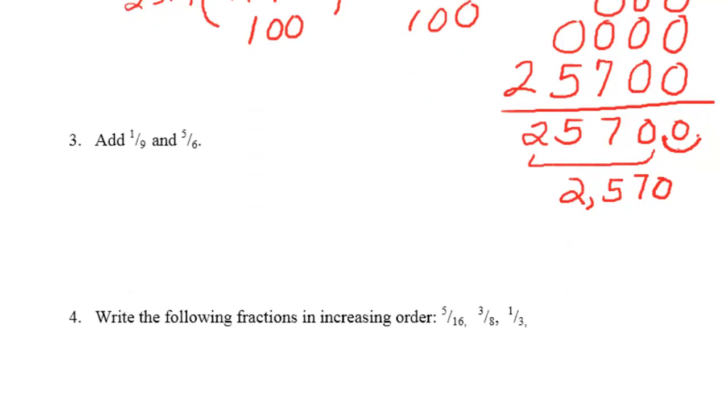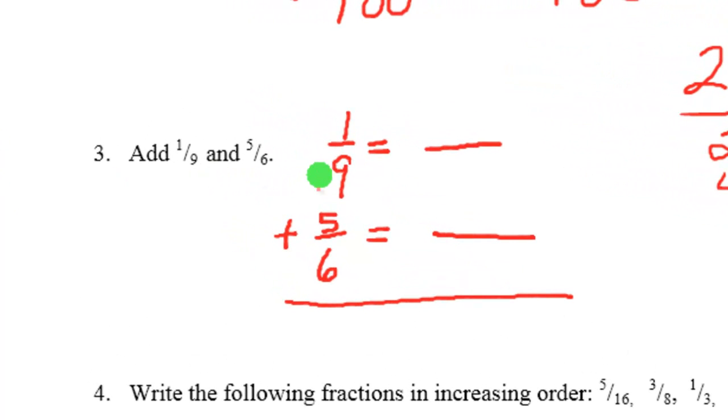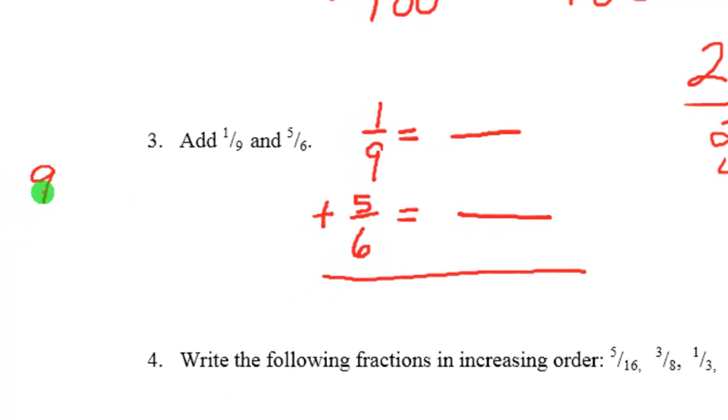Next, now we're adding some fractions here. We have 1/9 plus 5/6. And as you know, we need a common denominator when we're adding fractions. So we need something that's in the 9th table and also in the 6th table. If you can't see the common denominator right away, you can start by taking the bigger of the 2, which is 9, and just go down the table.